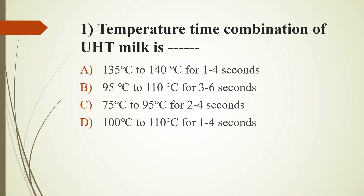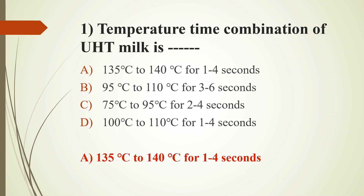First question: The temperature-time combination of ultra heat thermized milk is — Option A: 135°C to 140°C for 1 to 4 seconds; Option B: 95°C to 110°C for 3 to 6 seconds; Option C: 75°C to 95°C for 2 to 4 seconds; Option D: 100°C to 110°C for 1 to 4 seconds. The answer is Option A: 135°C to 140°C for 1 to 4 seconds.